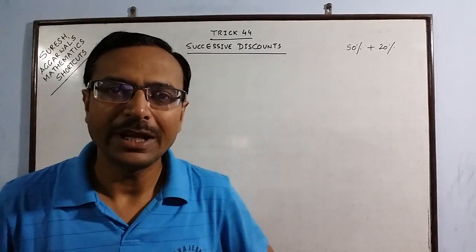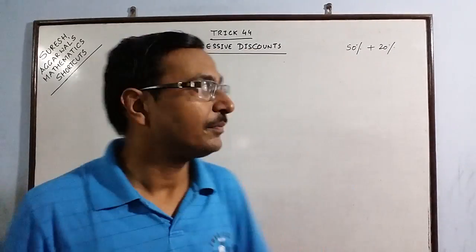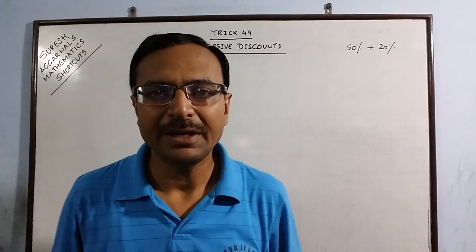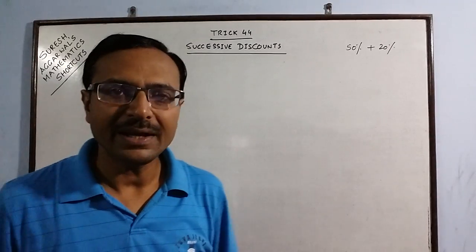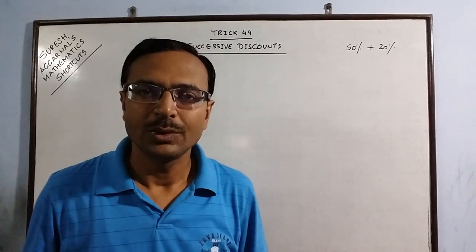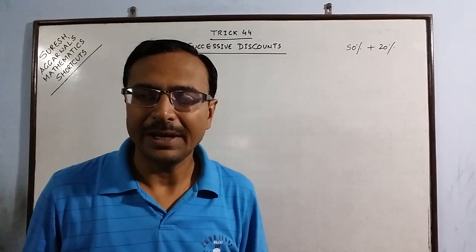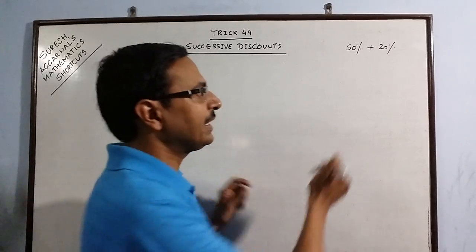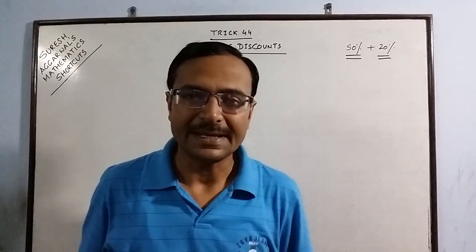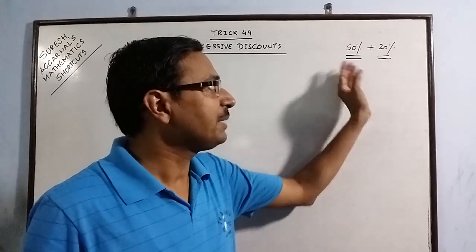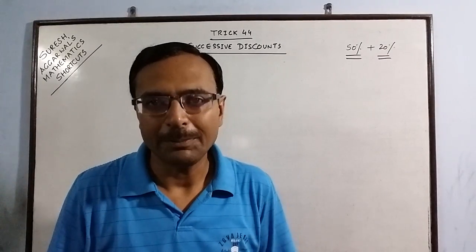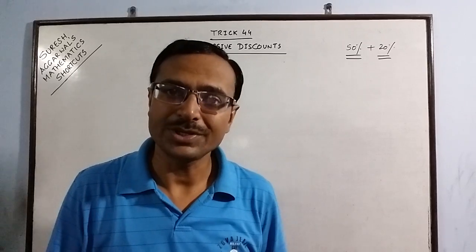Hello students, today I am going to deal with another very important concept, that of successive discounts. To let you understand in a better way what successive discount is, I will take an example wherein you go into a textile shop and the shopkeeper says the MRP of this item is so and so and you will be getting a discount of 50% plus 20% on the textiles. You tend to think that 50% and 20% discount will add up to 70% discount on the MRP, whereas the situation is a little bit different.